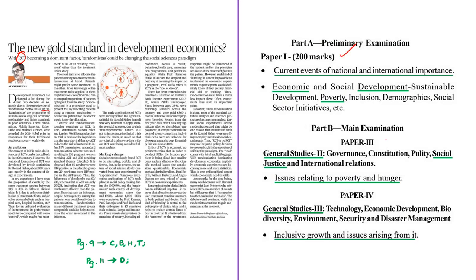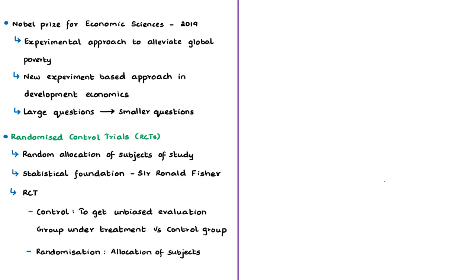The syllabus linking of this news article is given here for your understanding. The Nobel Prize for Economic Sciences in 2019 was awarded jointly to Abhijit Banerjee, Esther Duflo and Michael Kramer for their experimental approach to alleviate global poverty. They introduced a new experiment-based approach in the field of development economics.